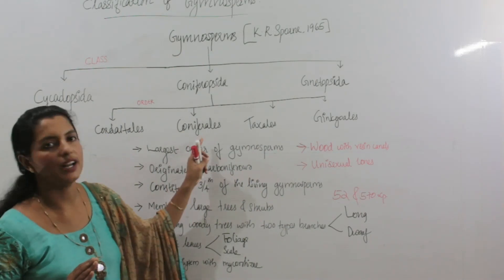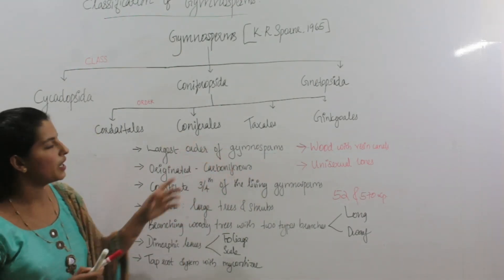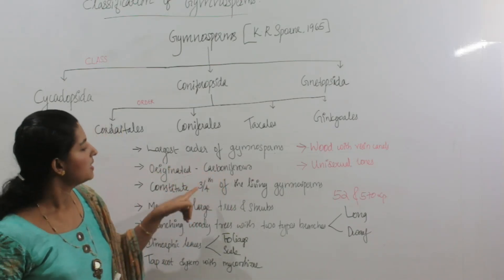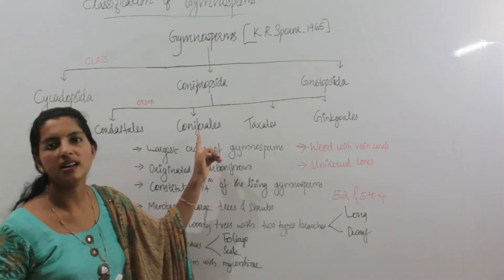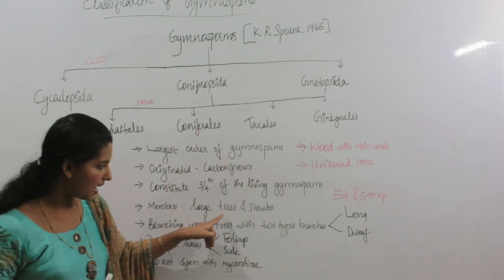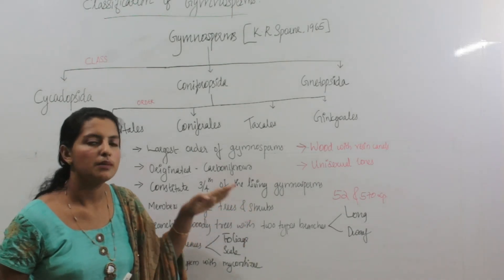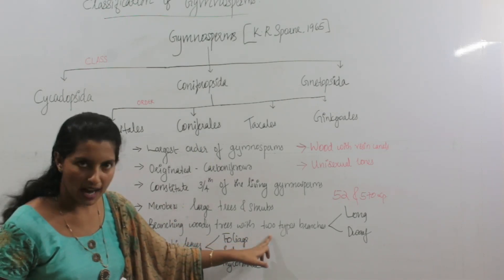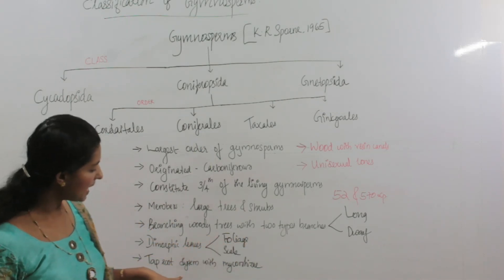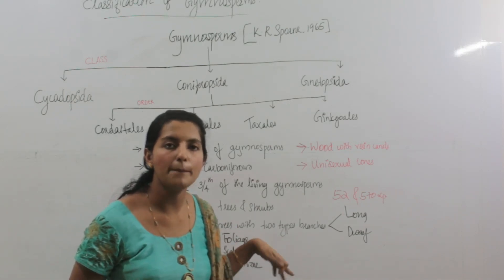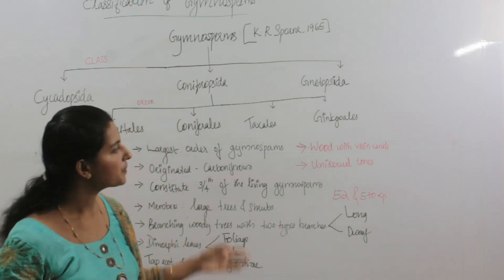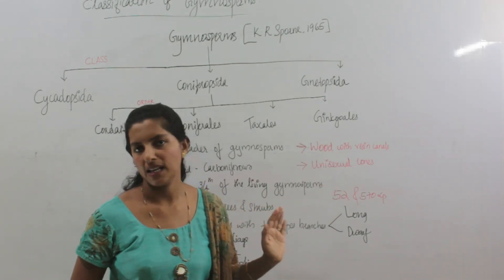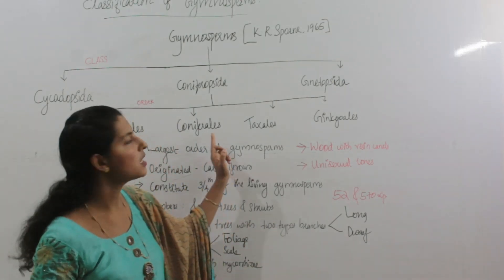These are the characteristic features of the order Coniferales — the largest order, originated in the Carboniferous period, and today three-fourths of the living gymnosperms are Coniferales. There are large trees and shrubs; Sequoia comes under this order. They possess two types of branches and two types of leaves, a tap root system with mycorrhizal association, wood with resin canals, and both male and female cones.